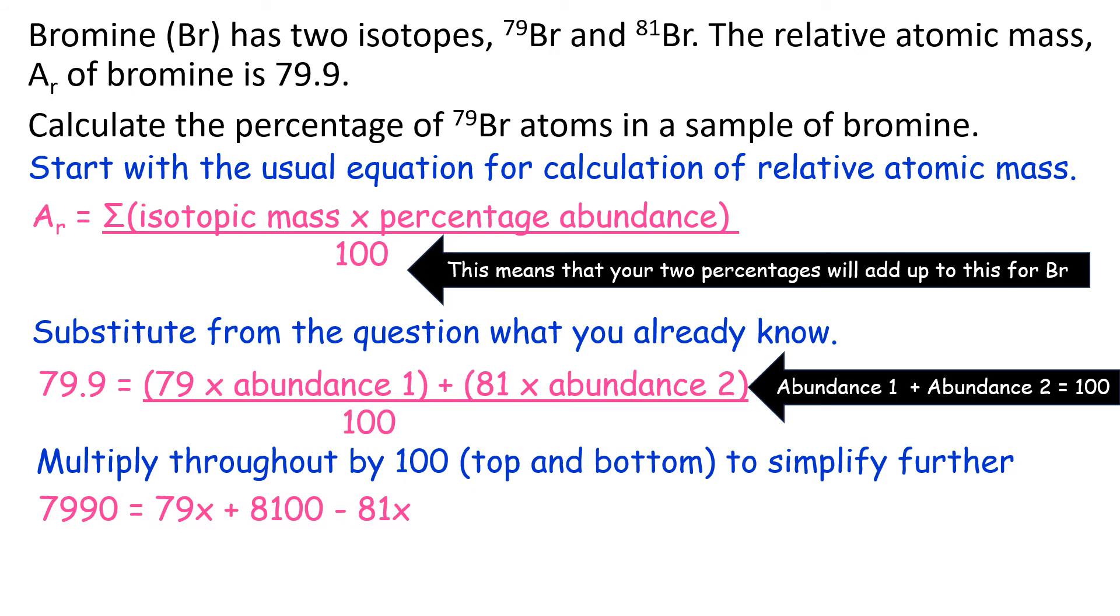Now you can collect like terms containing x and solve for it. So 79 minus 81 is minus 2x, and 7990 minus 8100 is minus 110.